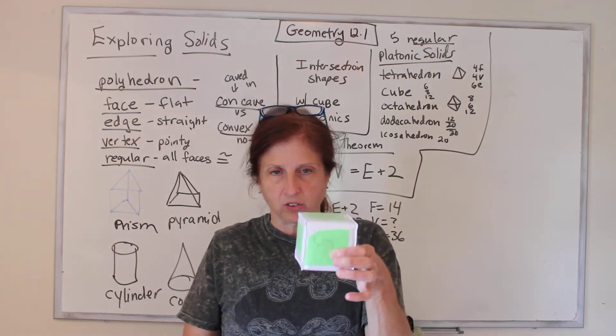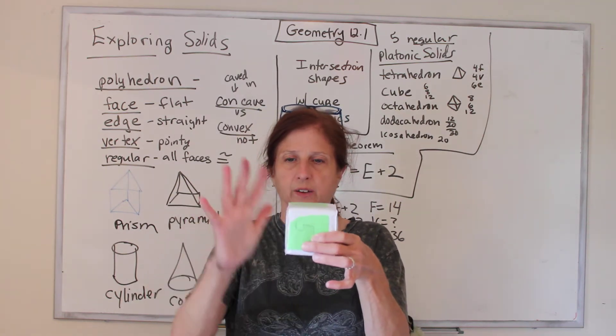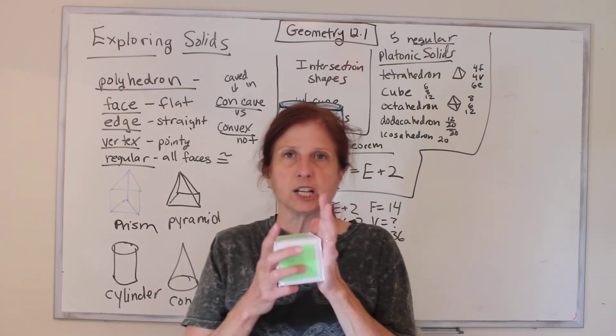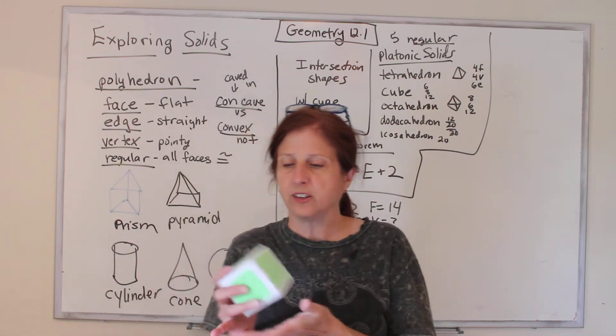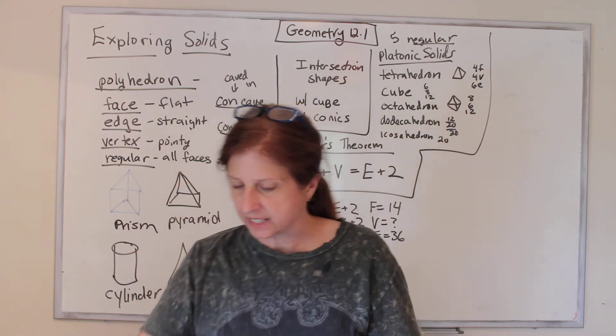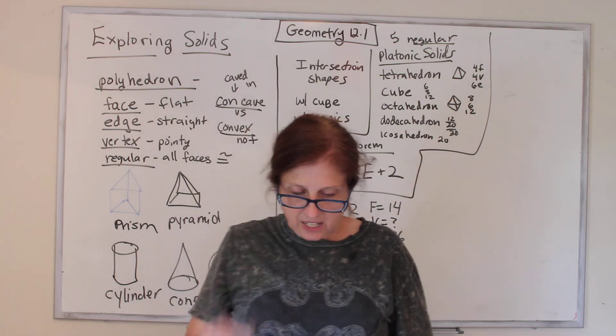And you can count the vertices. One, two, three, four, five, six, seven, eight. So that's what we're going to do. We're going to look at shapes, say are they a polyhedron, count their faces, count their edges, count their vertices. Doesn't that sound fun?